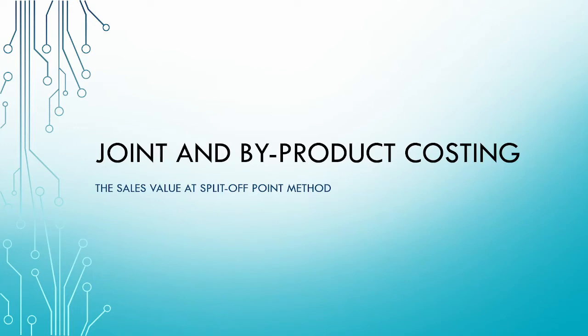Welcome to the third video in our series on joint and byproduct costing. In this video, we're going to look at the second of our four methods of allocating the joint costs, namely the sales value at split-of-point method.